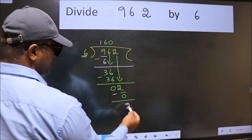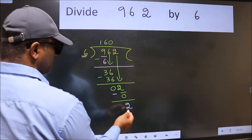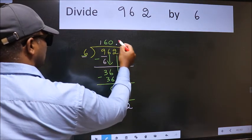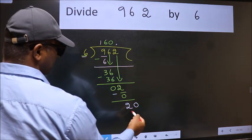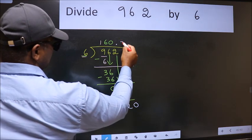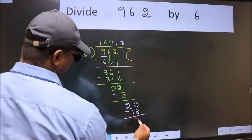Now we subtract. We get 2. Over here, we did not bring any number down. And 2 is smaller than 6. So now we can put dot and take 0. So 20. A number close to 20 in 6 table is 6, 3 is 18.